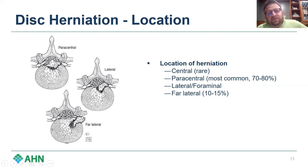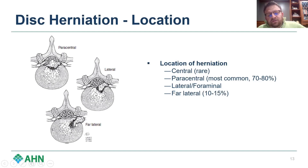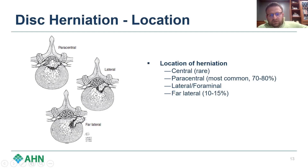The second type is a lateral or foraminal disc herniation, which is truly within the foramen and can still be addressed surgically through a traditional laminotomy approach. Less common is the far lateral disc herniation, where the disc herniates outside the spinal canal and outside the foramen, but can still compress the exiting nerve root. This accounts for about 10 to 15 percent of cases.